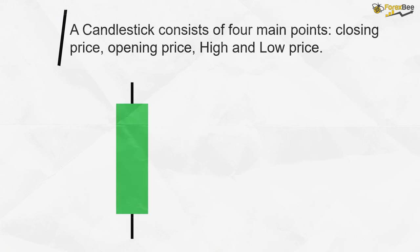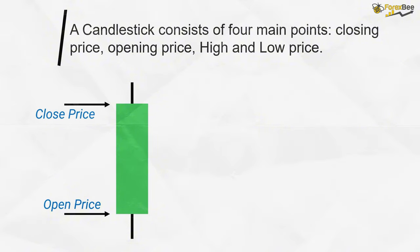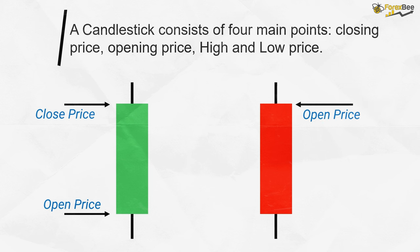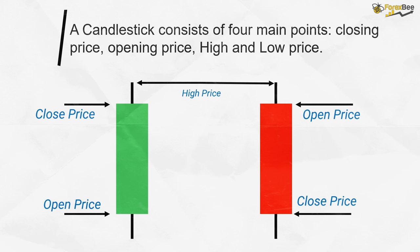First, let's take a look at the bullish candlestick. In a bullish candlestick, the market opens below and closes above the opening price, forming a body. In contrast, in a bearish candlestick, the market opens above and closes below the opening price. The highest price level reached by the market, which is the top of the wick, is called the high of the candle. The lowest price level reached is called the low of the candle.